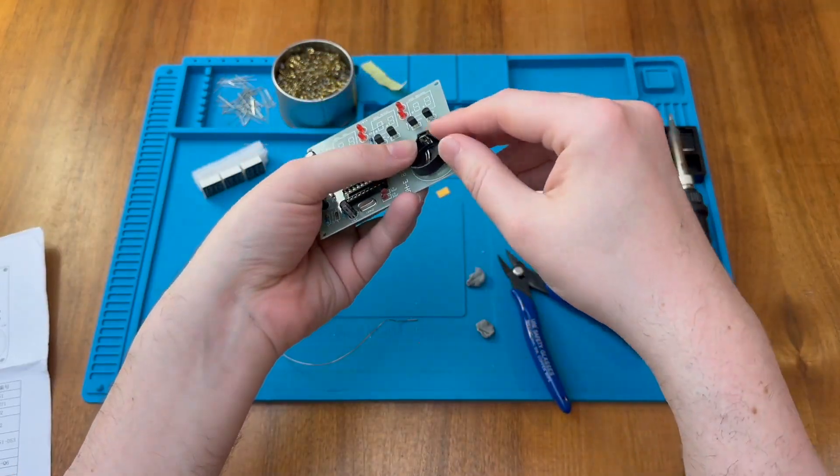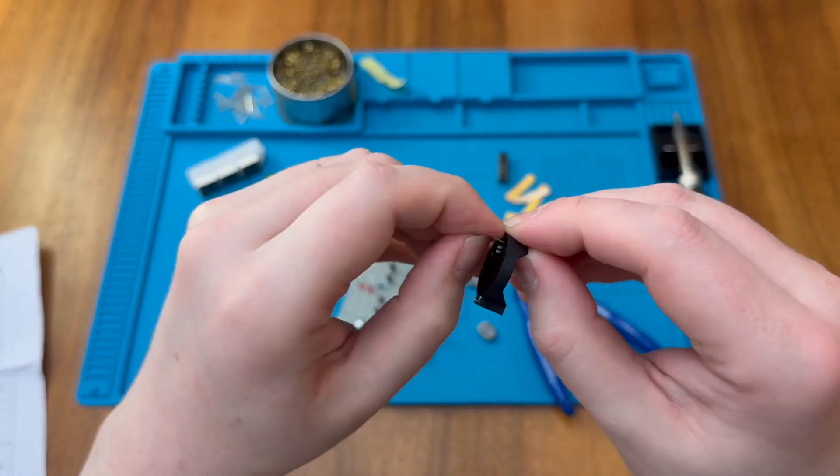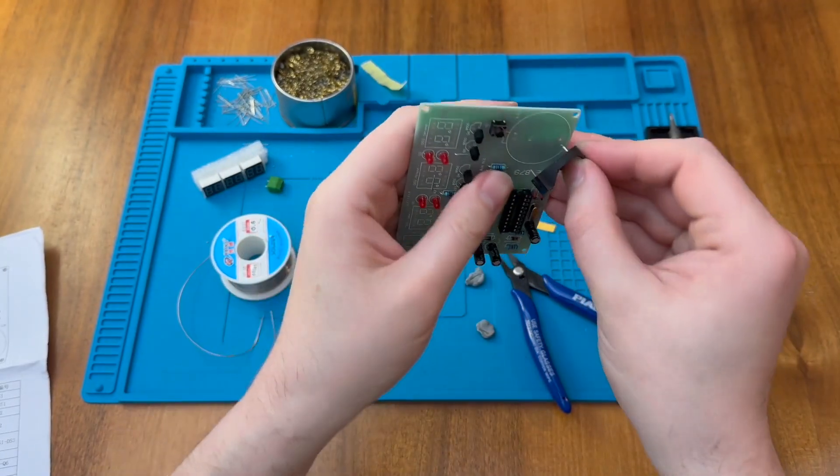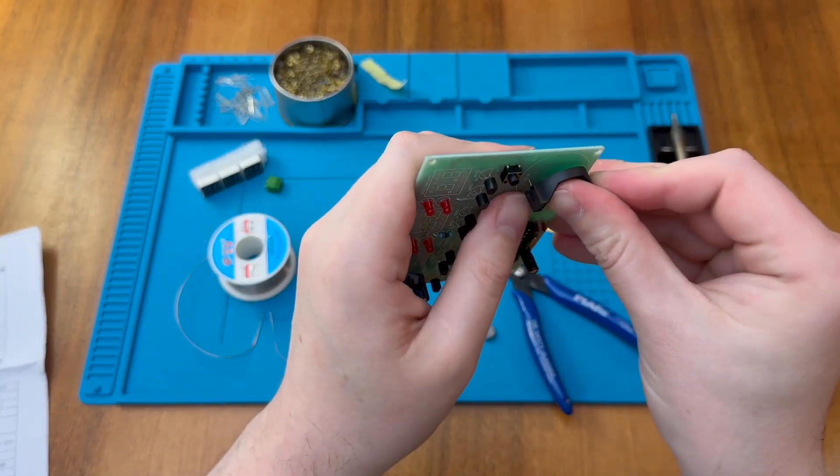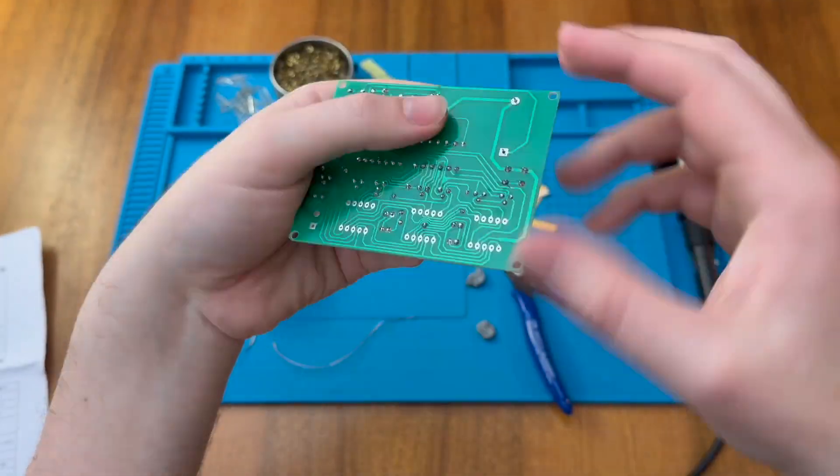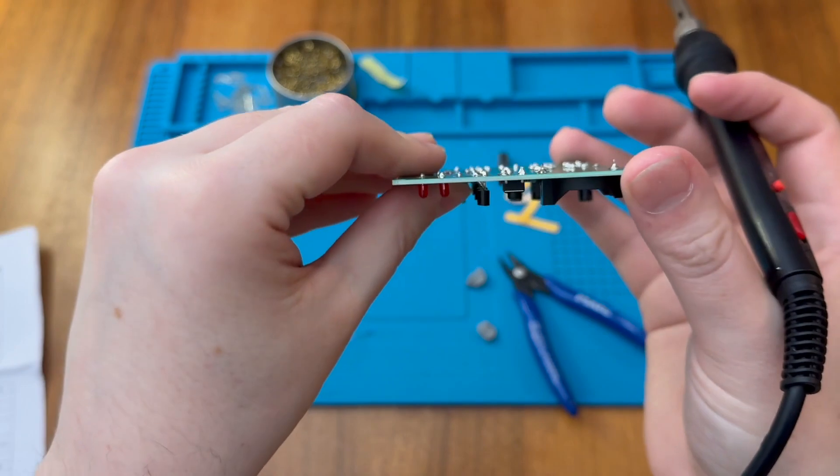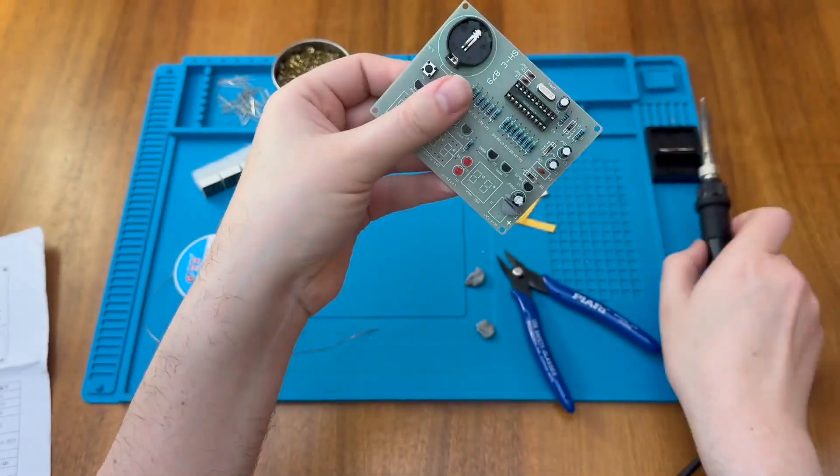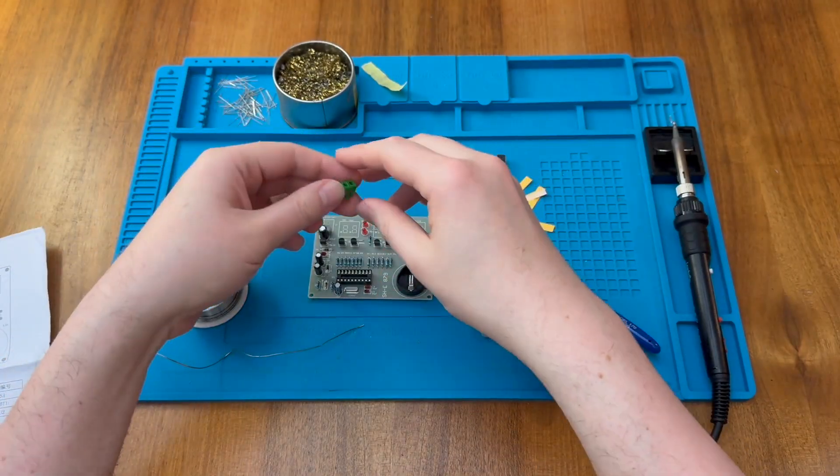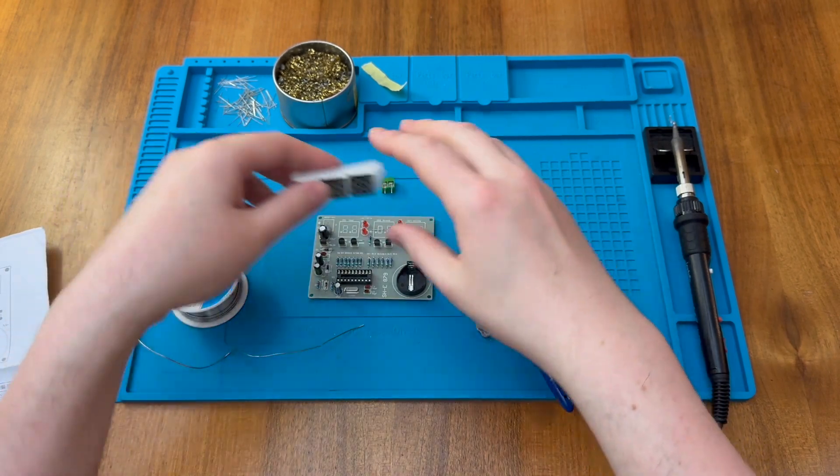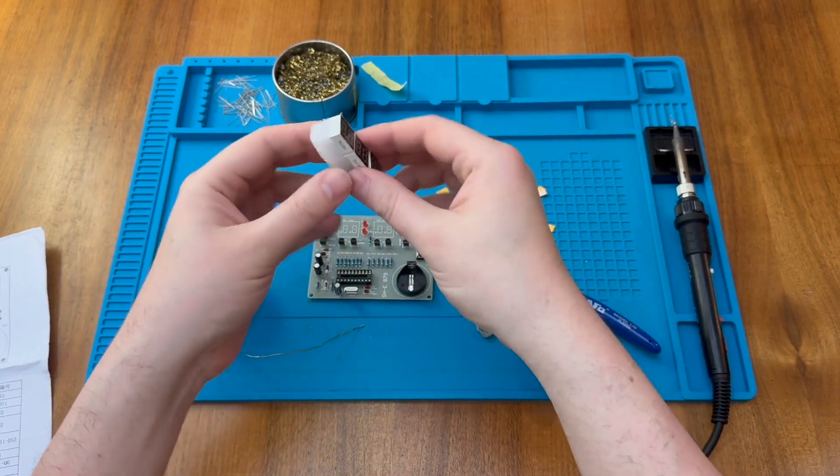Let's put in this battery contact here. Make sure that's all the way through so that the battery will sit flat. Plenty of solder on those pads as they are mechanical as well as electrical.